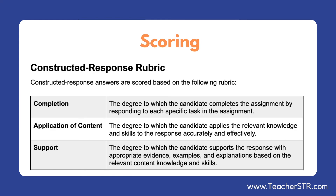The scoring rubric is scored based on three components. The first is completion, to which the candidate completes the assignment by responding to each specific task. Number two is application, where the candidate applies the relevant knowledge and skills to the response accurately and effectively. Number three is support, to which the candidate supports the response with appropriate evidence, examples, and explanations based on the relevant knowledge and skills.